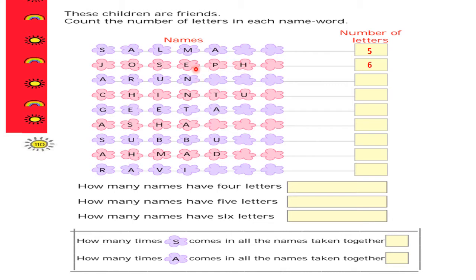Now A-R-U-N, that is Arun. How many letters are there? One, two, three, and four — so let's write four. Now C-H-I-N-T-U, that is Chintu. Let's count the letters: one, two, three, four, five, and six. So let's write six.